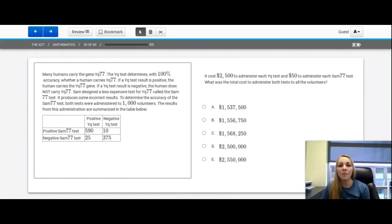We are going to use this prompt for the next four questions. Question number 35. Many humans carry the gene YQ77. The YQ test determines with 100% accuracy whether a human carries YQ77. If a YQ test result is positive, the human carries the YQ77 gene. If a YQ test result is negative, the human does not carry the YQ77. SAM designed a less expensive test for YQ77 called the SAM77 test. It produces some incorrect results. To determine the accuracy of SAM77 test, both tests were administered to a thousand volunteers.